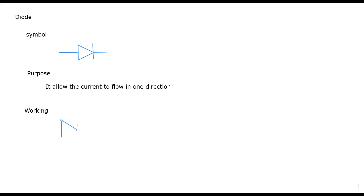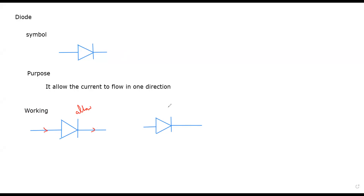You don't have to learn the internal working, only how it will behave when used in a circuit. When current is passing through in the direction of the play symbol it will allow that current. It's easy to remember: when you press play the video will play, it will work. When you press pause it will stop. If current is coming from the other side it will be blocked.